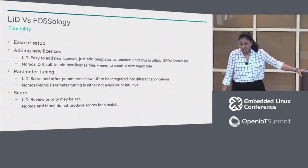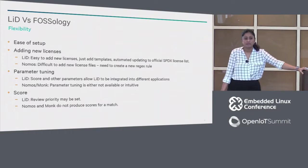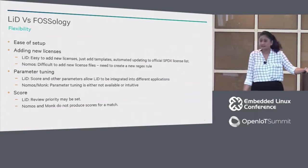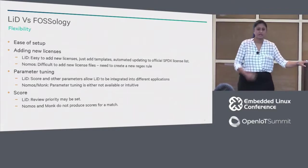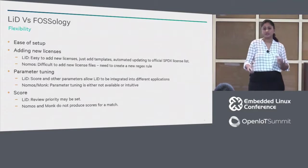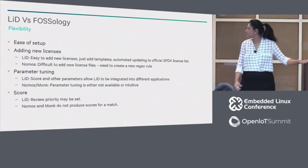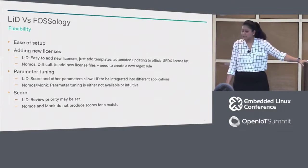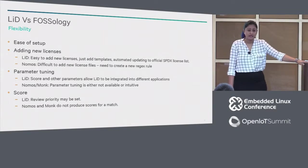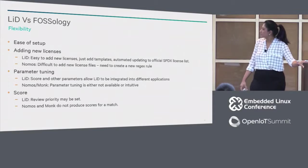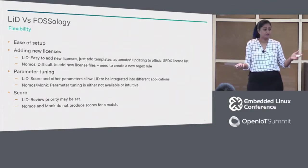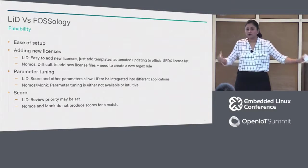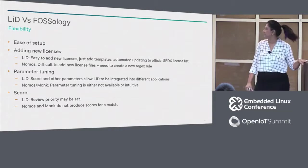In terms of adding new licenses, we do have a feature to automatically update licenses from your SPDX license list — just add the templates you need, add custom templates if you choose, and you're off to the races. With Nomos it's a bit difficult; you have to add a new regex rule and recompile, so you need to really understand the nitty-gritties of Nomos. In the area of parameter tuning, you can set thresholds for similarity scores depending upon the tolerance of your application. Nomos does not offer any kind of parameter tuning beyond altering your regex patterns. Monk does allow you to configure how many words to skip before bailing out of a match, but it's not really that intuitive.